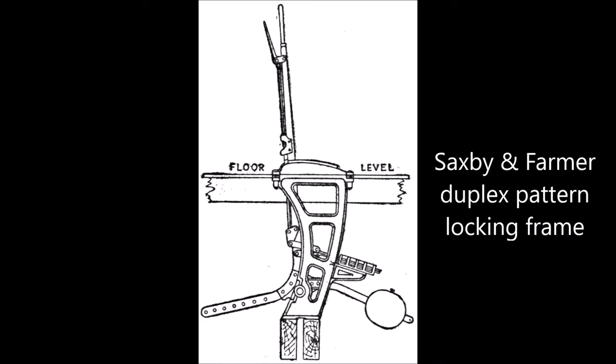The Saxby and Farmer's duplex pattern locking frame. The levers are mounted upon a turning shaft at four or four and a half inch centres as required. Each lever carries two tappets, one being connected to the lever direct and the other to the lever catch handle. The two tappets work in the same groove in the locking box, one sliding over the other, the locks being thick enough to engage with both tappets.